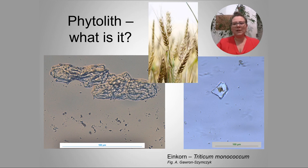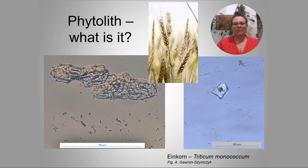Based on the observation of shapes and sizes, as well as comparative studies, we can determine the species affiliation of a particular phytolith. Phytoliths are extremely durable — they are resistant to soil acidity and temperatures up to more than 1,000 degrees.